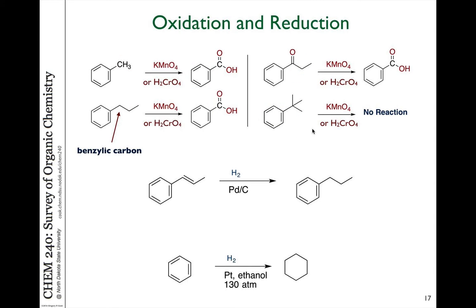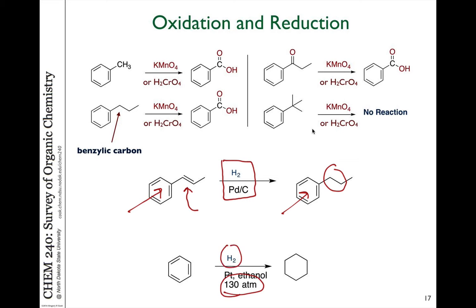We see this also in hydrogenation — the addition of hydrogen across a double bond. In a molecule where we have a double bond not within an aromatic ring, that gets hydrogenated to the alkane just fine. However, all the double bonds in the ring remain in the product untouched; they're not reduced by hydrogen. If we force it using special catalysts and high pressures and high temperatures, we can get hydrogen to add to those double bonds, but it's extremely difficult, demonstrating again that aromatic stability makes these very unreactive towards typical alkene reactions.